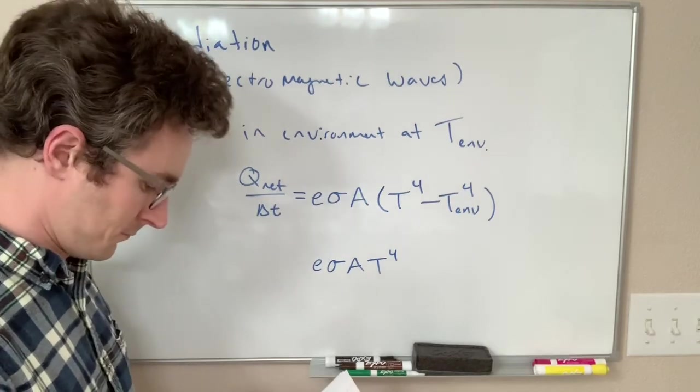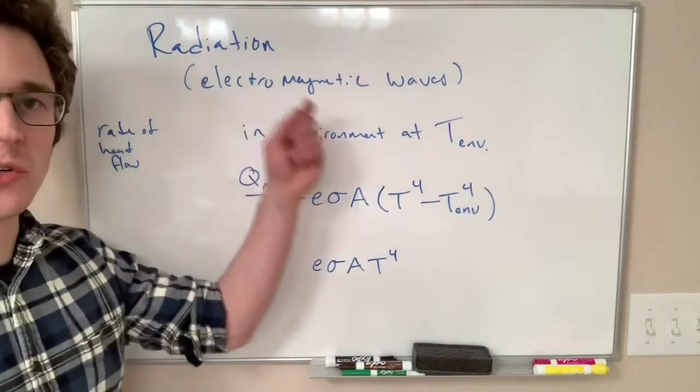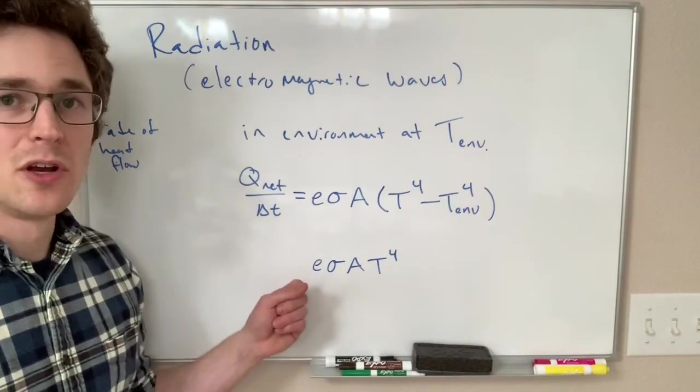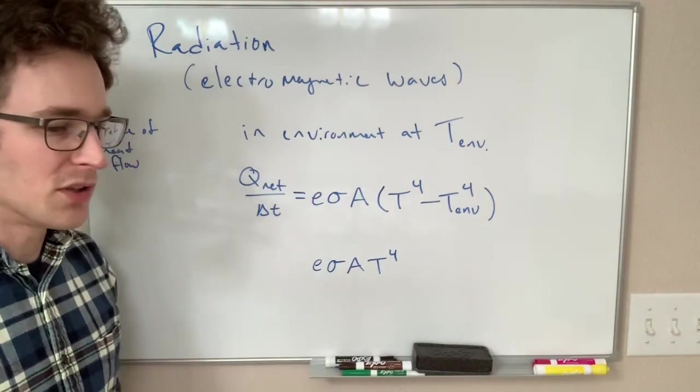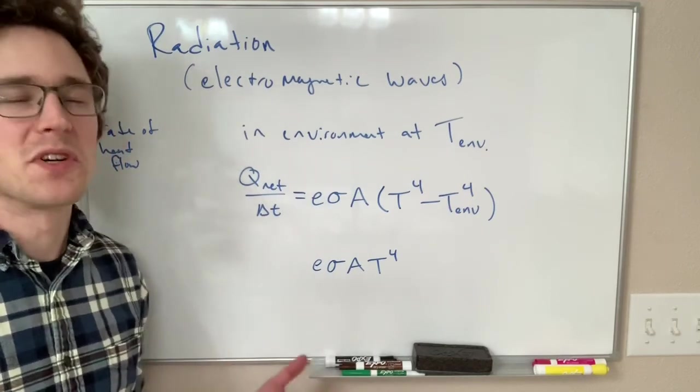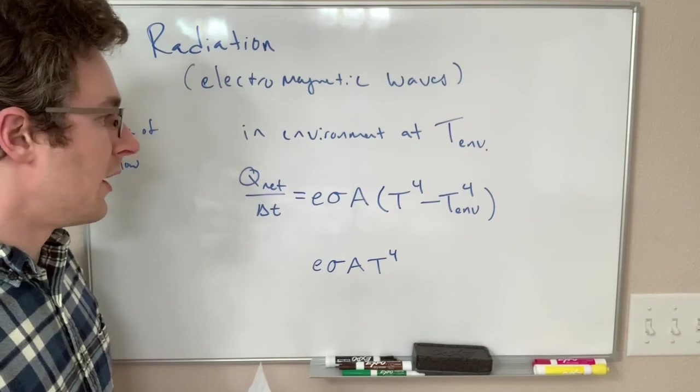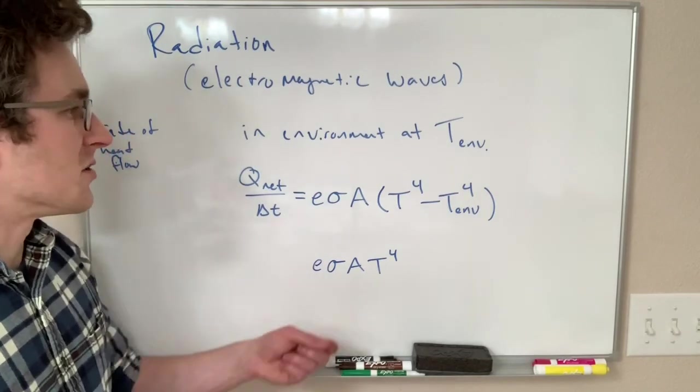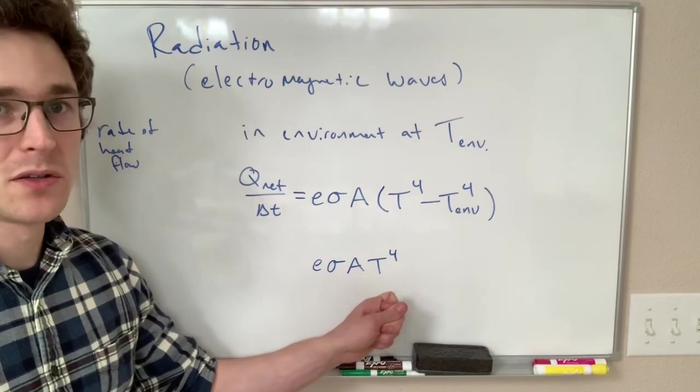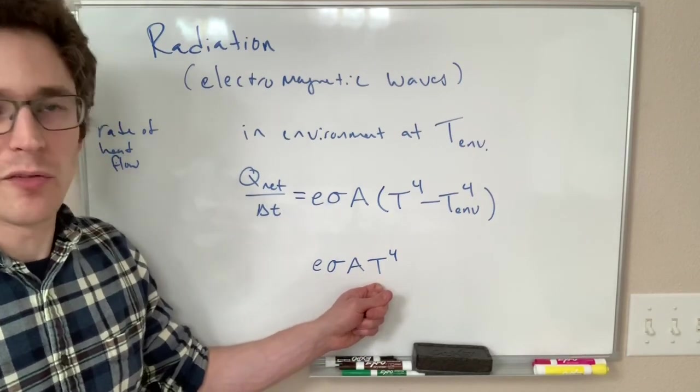It turns out that in a lot of cases you can pretty much ignore radiation at low temperatures. Radiation is much much less than typically much much less than convection or conduction, but at high temperatures radiation is almost always going to dominate because this T to the fourth gets so big at a thousand kelvin or two thousand kelvin.